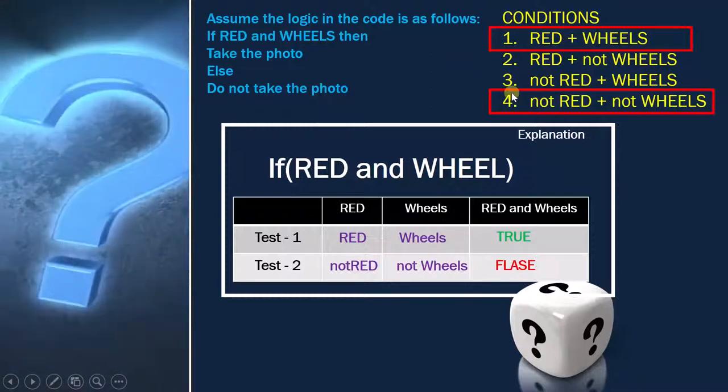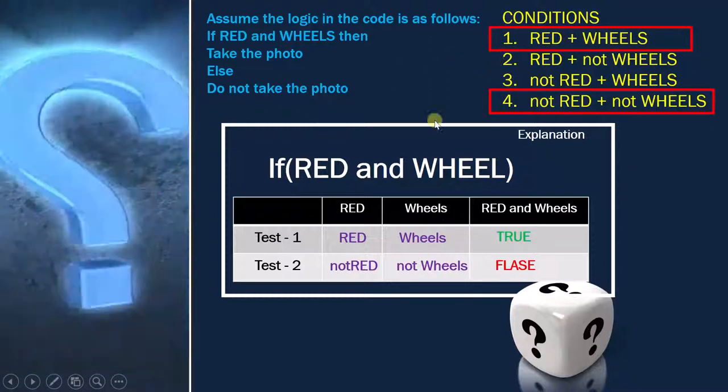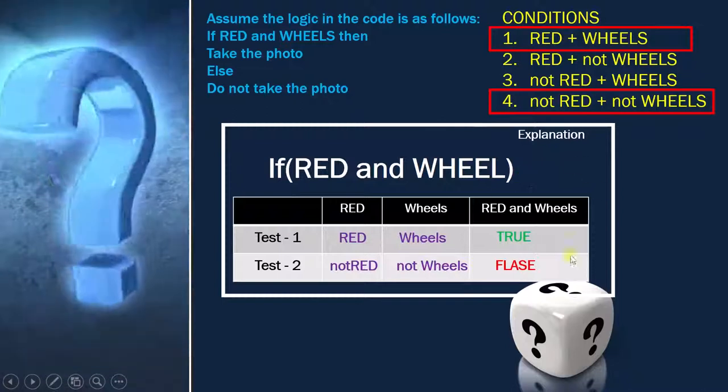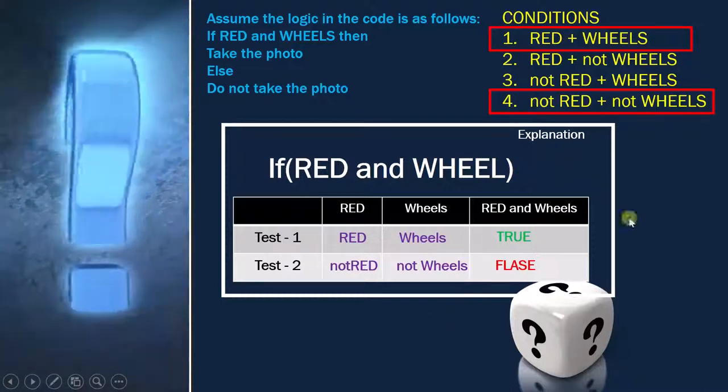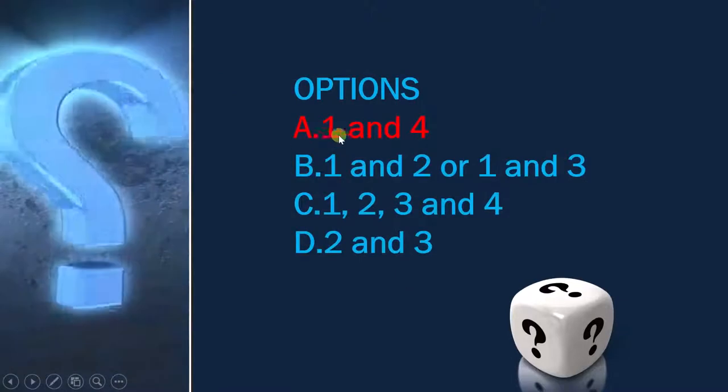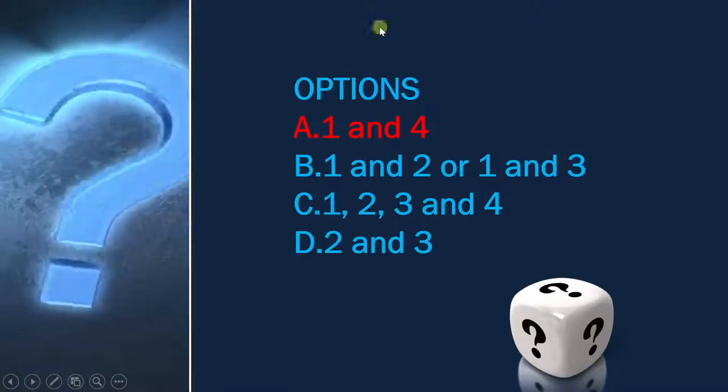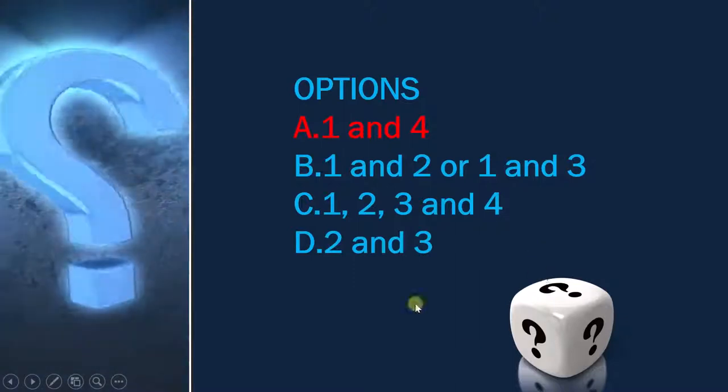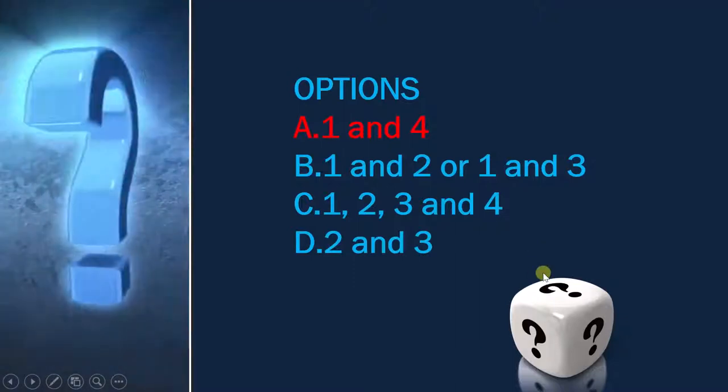So this is the combination where you are achieving 100% condition coverage as well as 100% decision coverage. So our answer is going to be A, 1 and 4. This is how you have to handle condition coverage, decision coverage questions together.